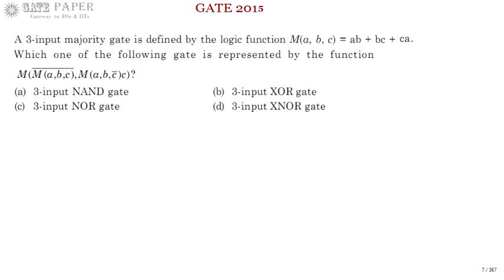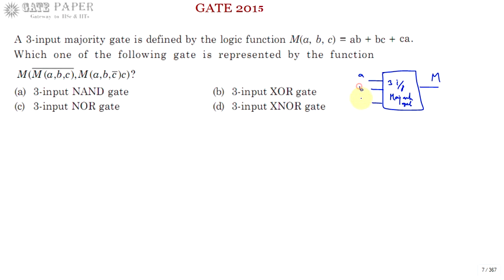We are discussing a GATE 2015 ECE problem. A three-input majority gate is defined by the logic function m(a,b,c) = ab + bc + ca. The question asks which gate is represented by the function m of m(a,b,c) complement, m(a,b,c̄), and c.